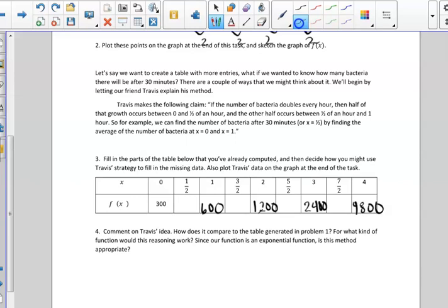We're asked to find how many bacteria there would be after 30 minutes. So Travis makes a claim. He says that he thinks that if the number of bacteria doubles every hour, then half of that growth should occur between 0 and 1 half. So he's saying because the difference between 600 and 300 is actually 300,